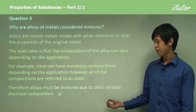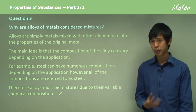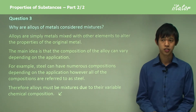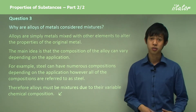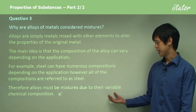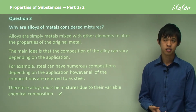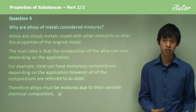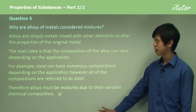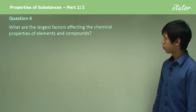Therefore alloys must be mixtures because their chemical composition is variable — you can change it while still calling it by the same name, like steel. They are not fixed in their composition, and that is why we consider alloys as mixtures.